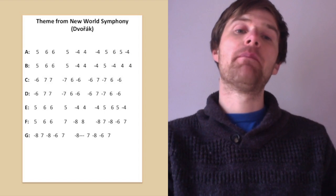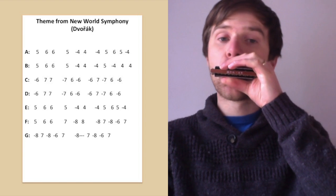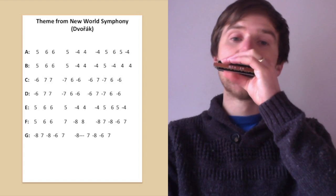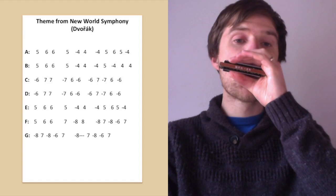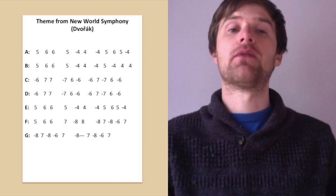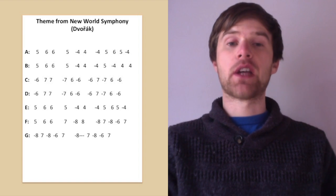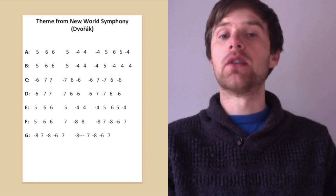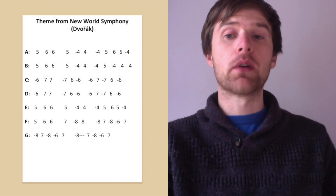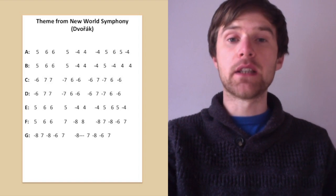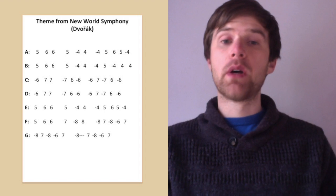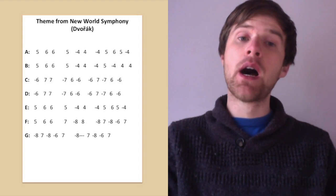So line B sounds like this. [plays] So you'll notice the first two parts of line B are the same as the first two parts of line A. So you don't need to worry about any different tab for those. It's just those last five notes that change. So we've got four draw, five blow, four draw, four blow, four blow. So that last phrase is... ba, ba, ba, ba, ba, ba, ba.